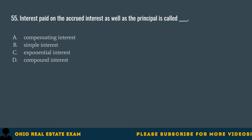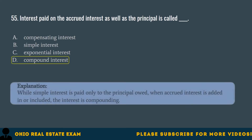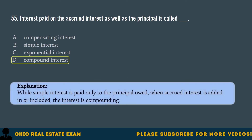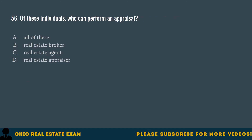Question 55. Interest paid on the accrued interest as well as the principal is called... A. Compensating interest. B. Simple interest. C. Exponential interest. D. Compound interest. The correct answer is D. Compound interest. While simple interest is paid only on the principal owed, when accrued interest is added in or included, the interest is compounding.